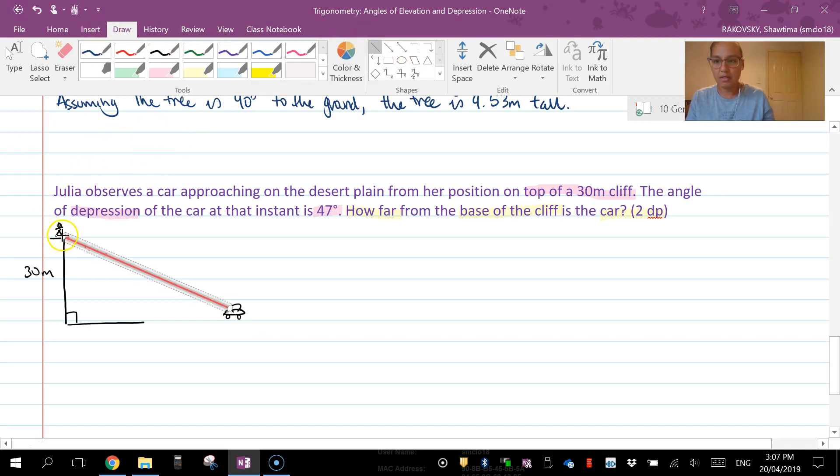So here's my angle of depression, but it's going to come from the horizontal. So I'm just going to change color and you're going to see that this is my horizontal. So my angle of depression is down below from that, so that's 47 degrees.